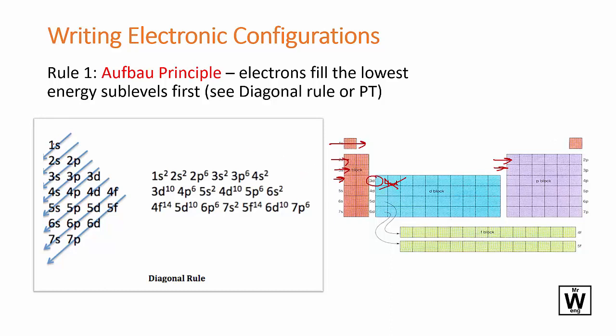The other way to do it is the diagonal rule where you just write out 1s, and then you have to know it's spdf and then each two you do two of them, three you do three of them, four you do four of them. By the time you get to five it doesn't really matter and you can kind of stop there, and then you just draw a diagonal down so you do 1s first then 2s, 2p, 3s, 3p, 4s, 3d, 4p, 5s.